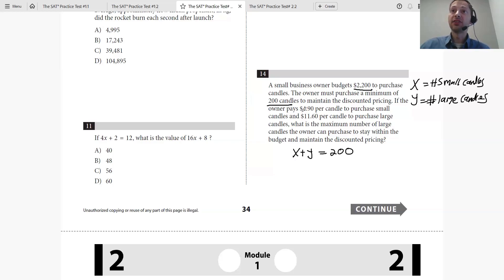What else do we know? It's $4.90 for the small candle and $11.60 for the large candle, and that adds up to $2,200. So we can set 4.9 times X plus 11.6 times Y equals $2,200. Now we have something that makes sense. This is just multiple equations with multiple unknowns. Probably the easiest is multiply the top equation by 4.9 and then subtract. I like elimination. So we multiply the top by 4.9, giving you 4.9X plus 4.9Y equals 980.